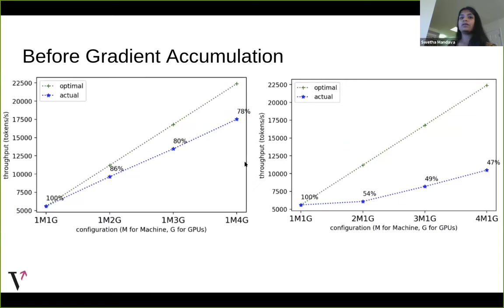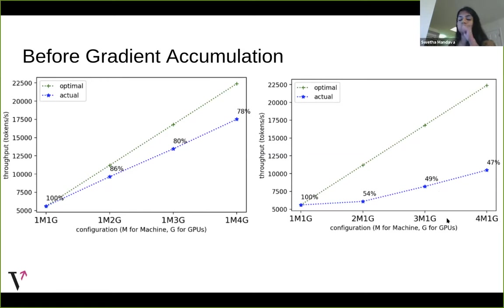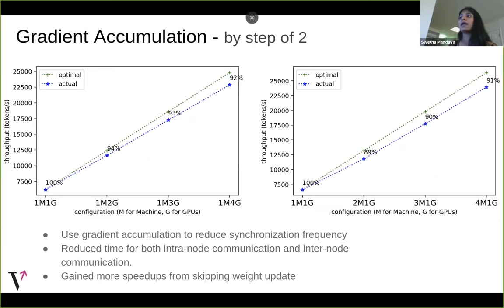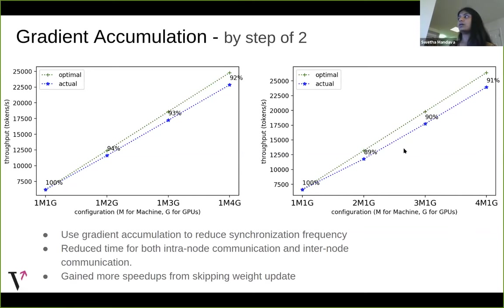Comparing results from gradient accumulation: on the left, we see scaling without gradient accumulation for one machine and up to four GPUs. On the right, scaling for one machine one GPU up to four machines one GPU — with slower interconnects because we're using GPUs from different machines. Without gradient accumulation, performance really suffers from low interconnect speed. With gradient accumulation, even with low interconnect speeds, the model scales quite well.